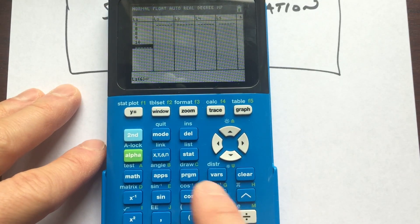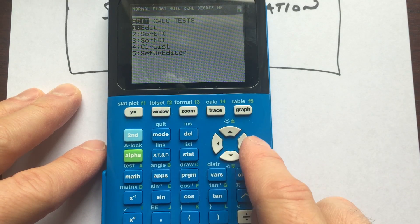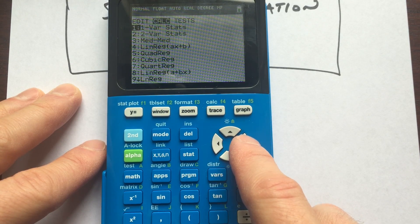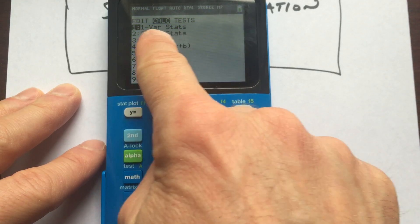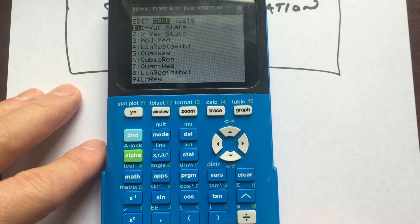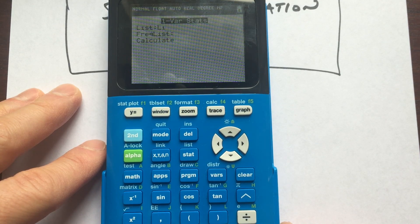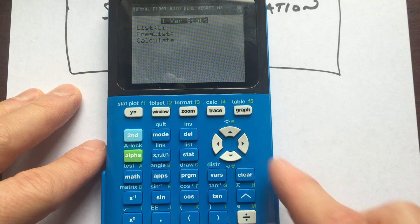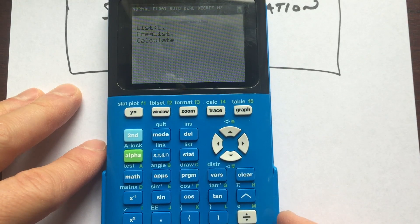So then what you want to do is you want to go back to stat. Okay, you want to arrow over to calculate. And we're going to select number one, one variable statistics. Since we're just working with just quiz scores, just one variable, we're going to select enter. You're going to arrow down to calculate. You can see we're working with list number one, enter.